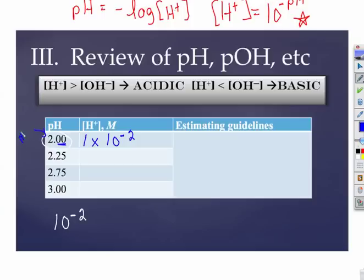This tells us magnitude - the number in front tells us magnitude. When we have a pH like 2.00, the numbers here tell us measurement. That's just 1 × 10⁻².